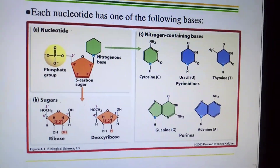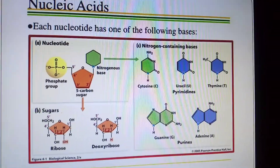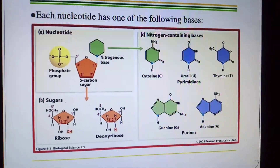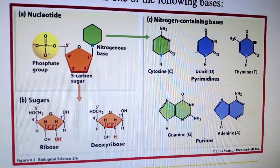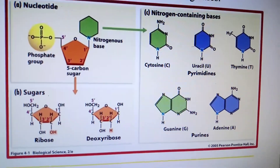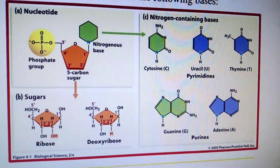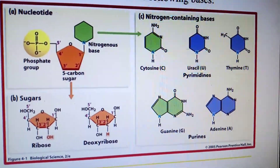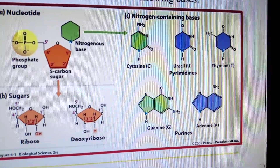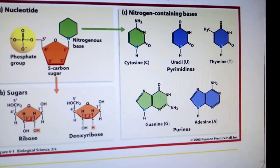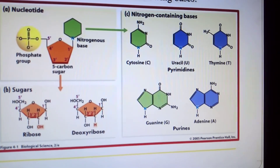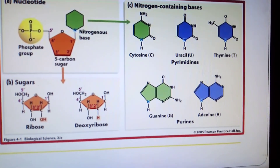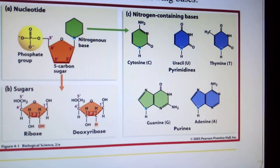Each nucleotide has one of the following nitrogen-containing bases. A nucleotide is made up of a phosphate group, a 5-carbon sugar, and nitrogen bases. The bases are: cytosine, uracil, and thymine — these three are pyrimidines — and adenine and guanine, which are purines.